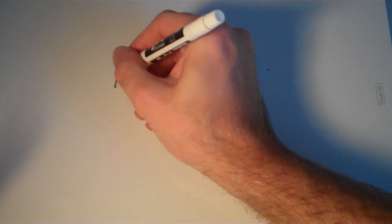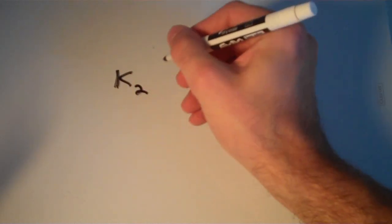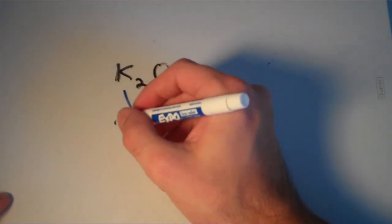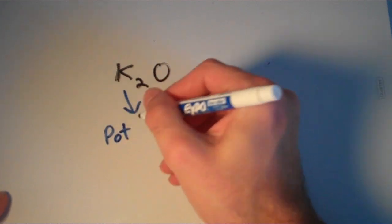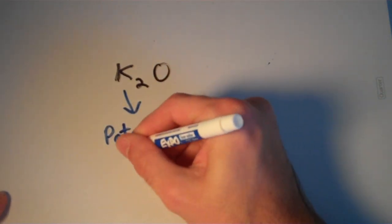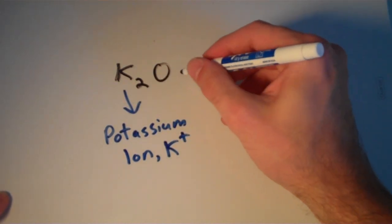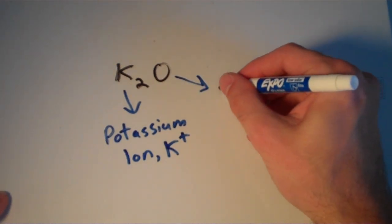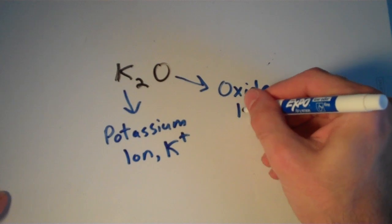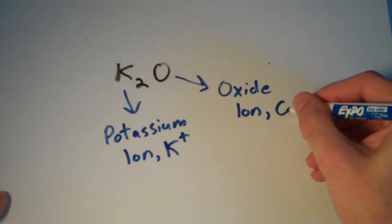Let's name another one. K2O. What is the name of that? Well let's start with our cation again. Our cation is just the potassium ion, or K+. And our anion is the oxide ion, which is O2-.